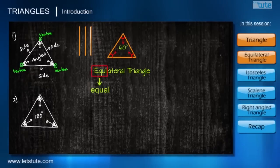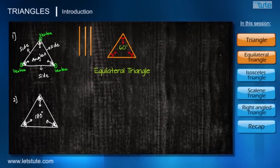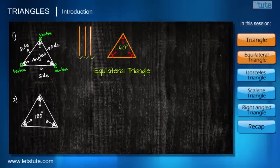Such triangles are called equilateral triangles. If you split this word, 'equi' means equal and 'lateral' means sides. So we have seen the case of three equal line segments forming a triangle.